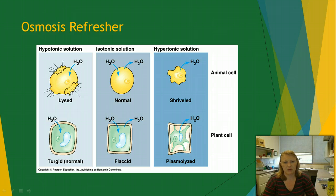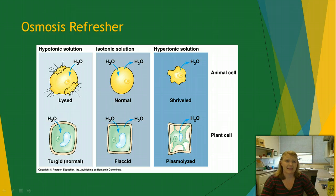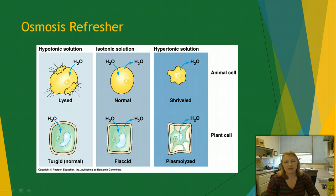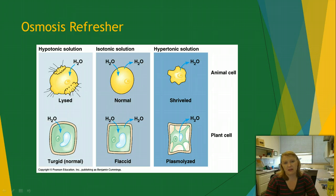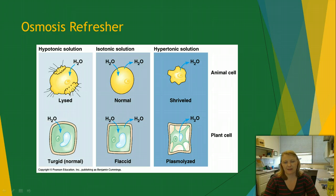Water can freely cross membranes, so remember: in a hypotonic solution, where the solute concentration outside the cell is less than inside, water will freely flow into the cell, and because we don't have cell walls like plants do, our cells will burst. In an isotonic solution, water moves in and out in even amounts. In a hypertonic solution, where solute is greater on the outside, the cell will shrivel up — and in animal cells, without a cell wall, this is very detrimental.